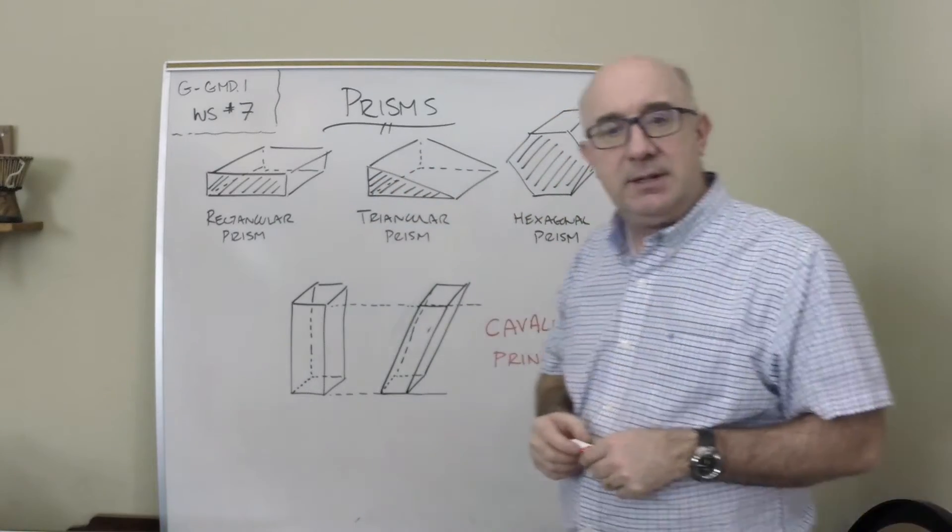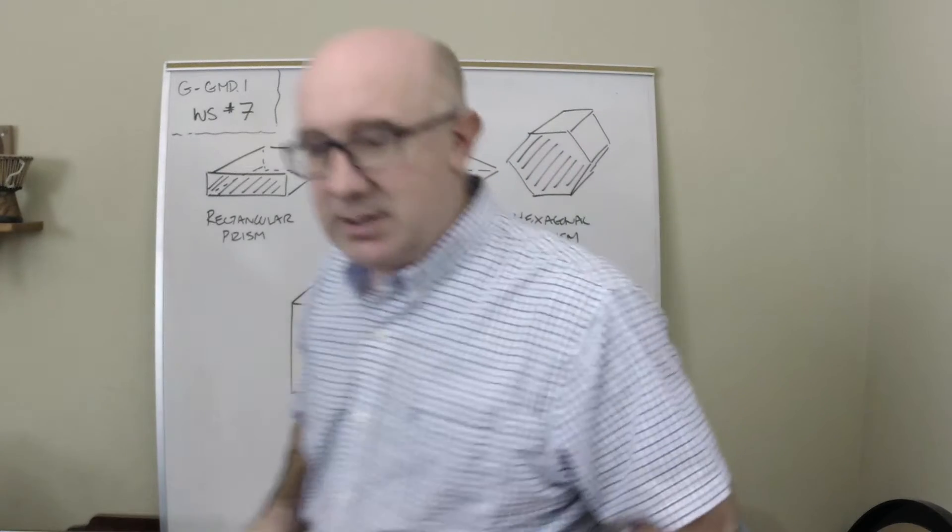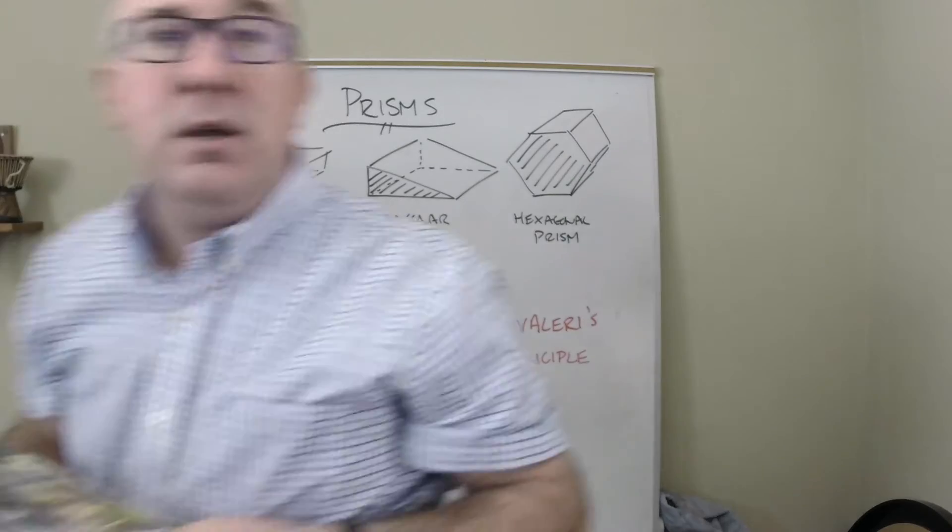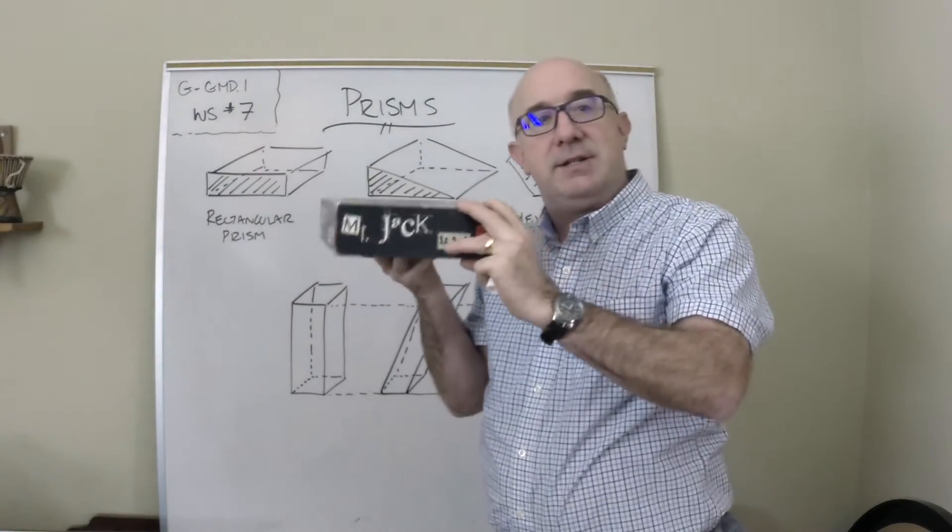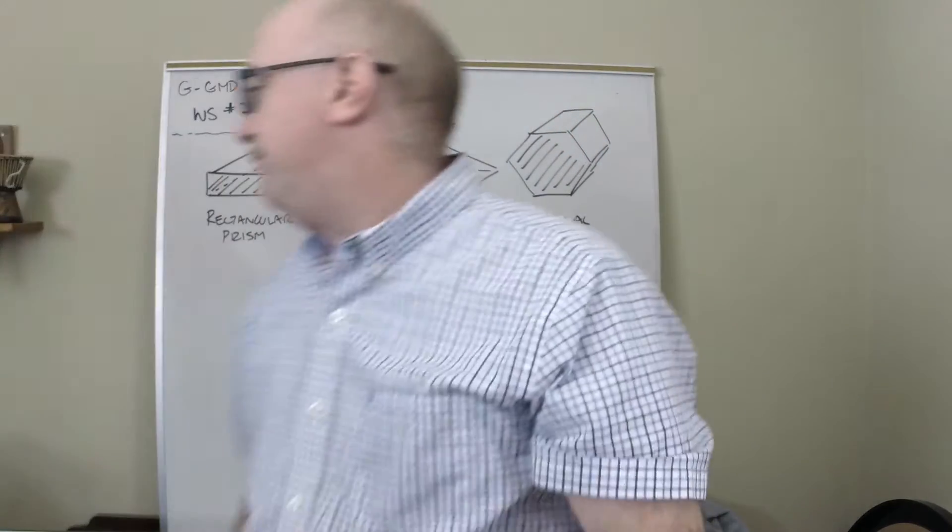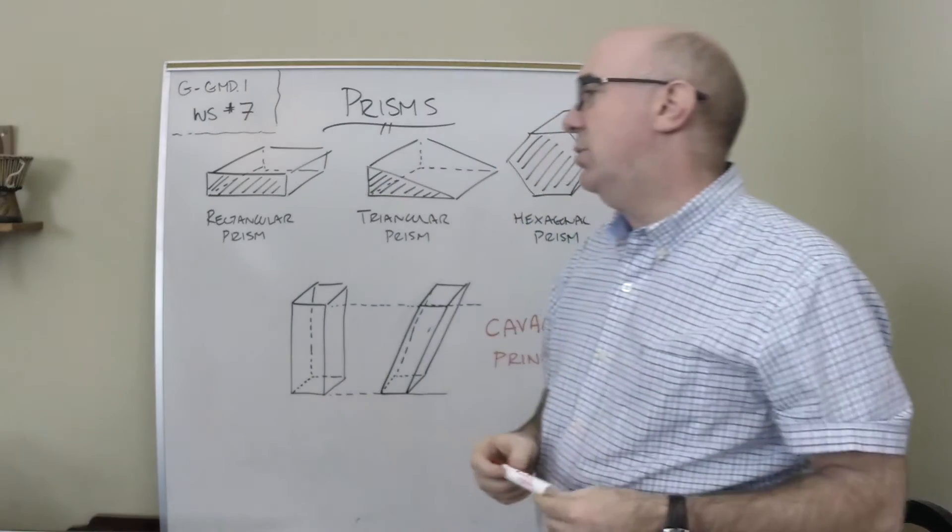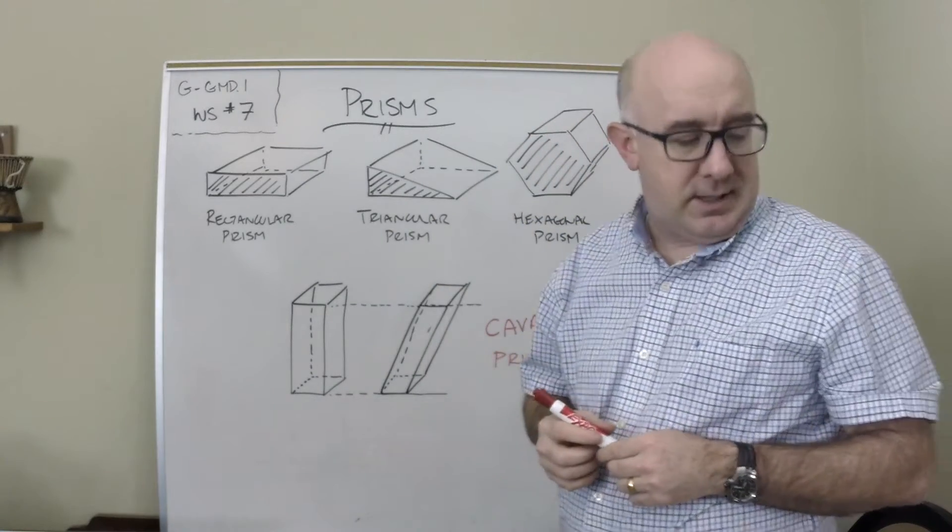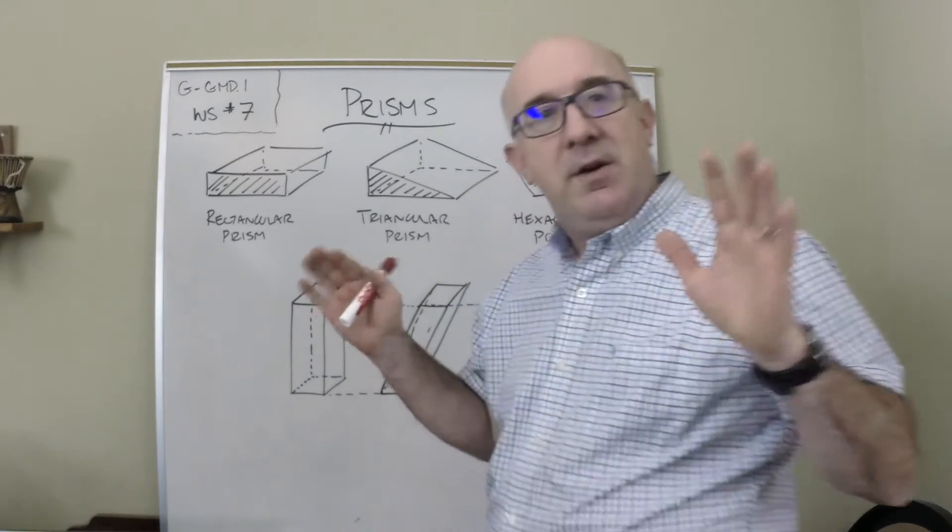I'm quickly looking around the room to grab something that is a prism. Here's something—here's a board game I have that has, you know, this is a rectangular prism, very simple shape. Trying to see if I've got something cool like a triangular prism, but I don't see anything kicking around that kind of works for that.